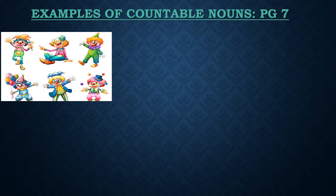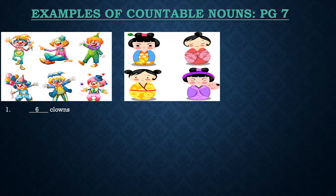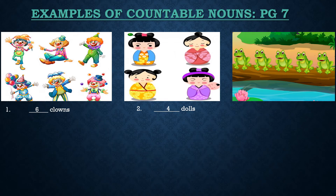The first picture has clowns. Counting: 1, 2, 3, 4, 5 and 6. There are 6 clowns. In the next picture there are dolls — 1, 2, 3, 4. There are 4 dolls. So let us write down 4 in the blank. In the third picture there are frogs — 1, 2, 3, 4 and 5. There are 5 frogs in this picture, so let us write down 5.